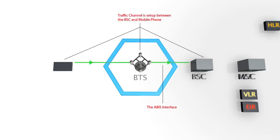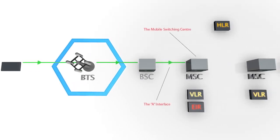Once this channel has been granted, the BSC allocates a traffic channel, which allows the mobile device to send the recipient's mobile number. That number is stored within a call setup message, sent through the BSS into the heart of the network, known as the MSC.